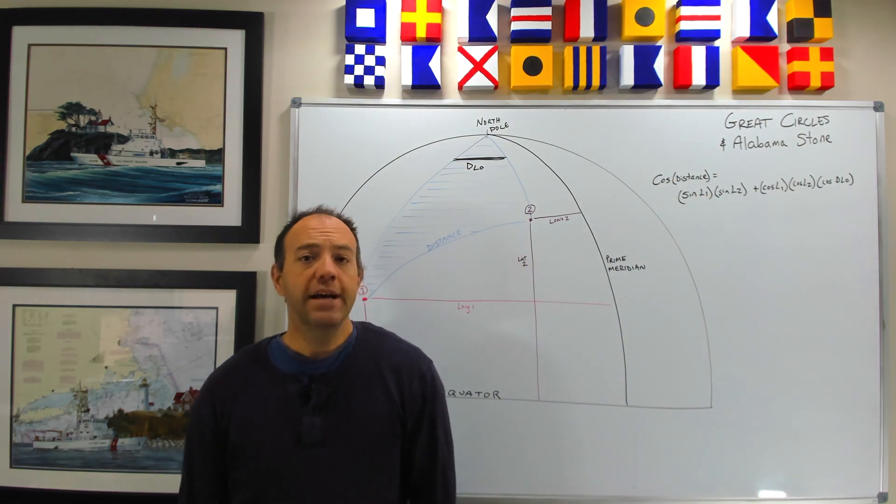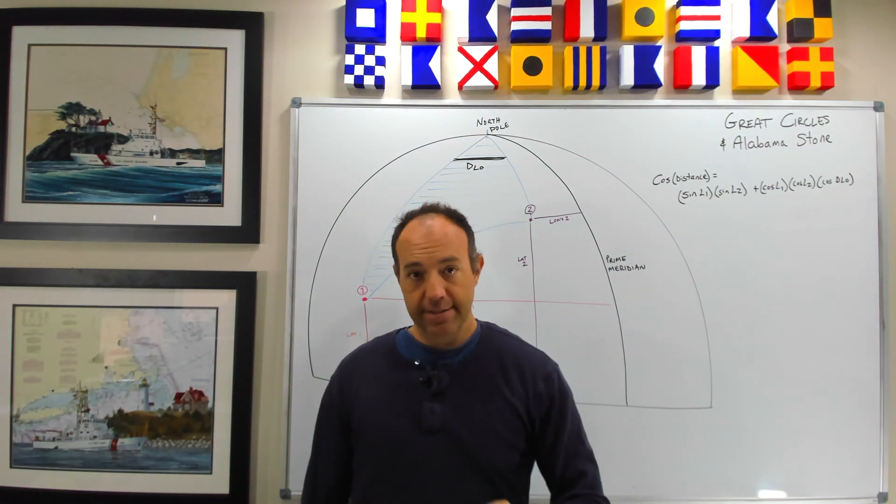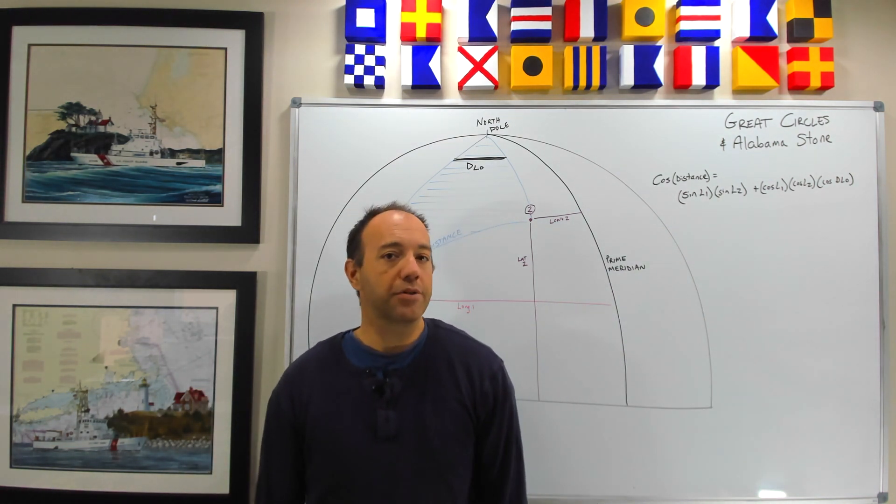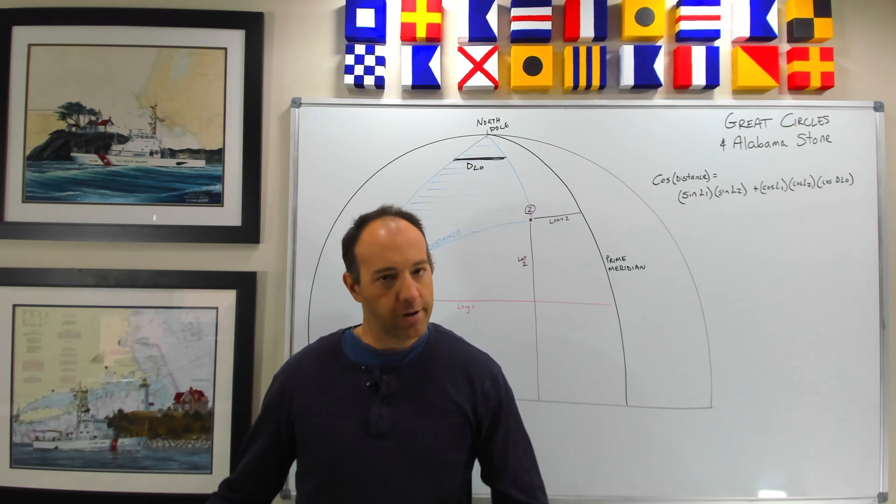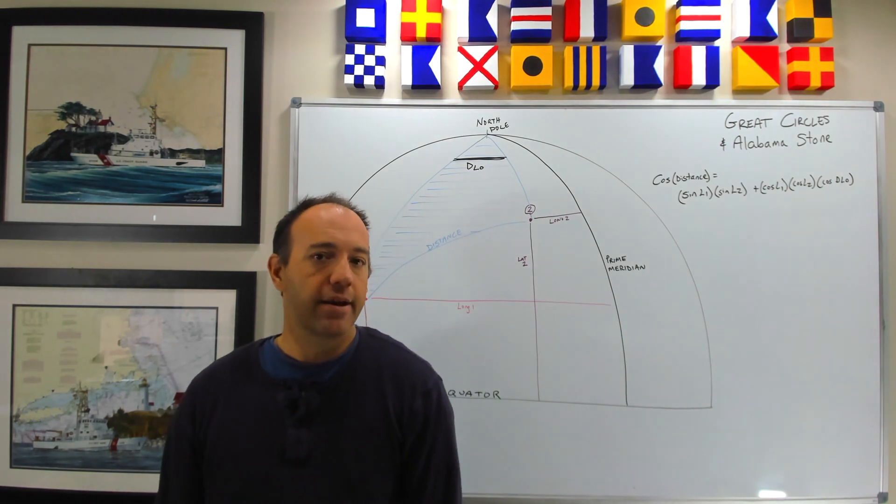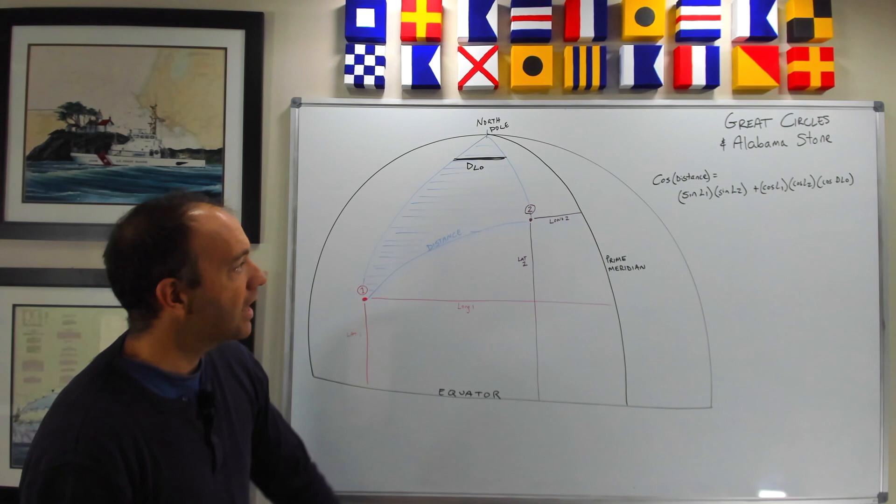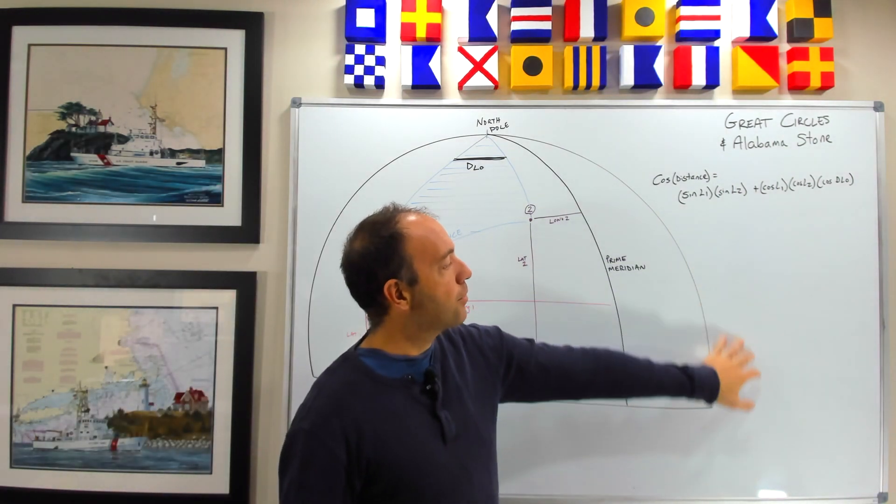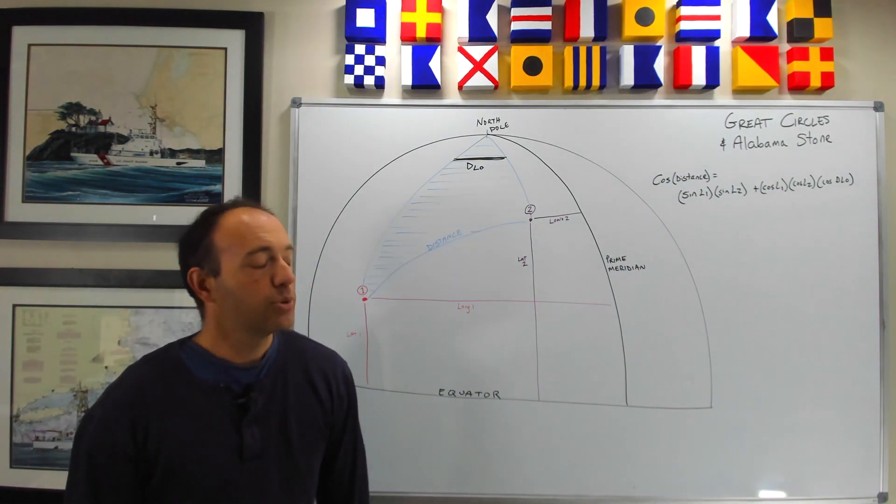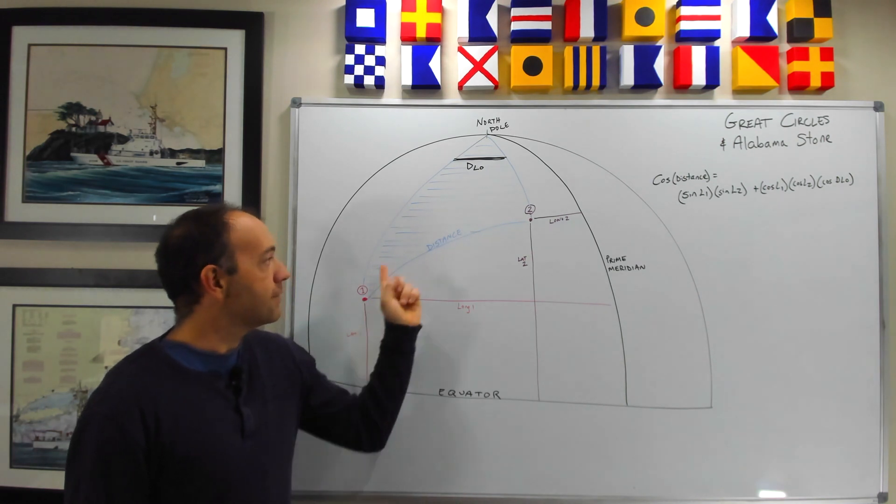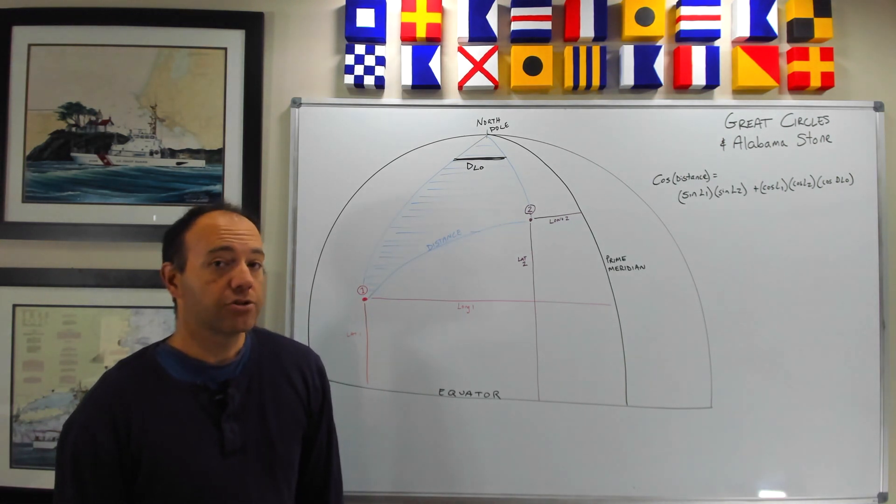Important to note that these latitudes and longitudes need to be in decimal degrees. So if you're not familiar with converting to decimal degrees, it's usually either multiplying or dividing by 60 depending on which way you're going. But if you can plug into this formula, you can calculate the distance between any two points on the earth given their latitudes and longitudes and their difference in longitudes.